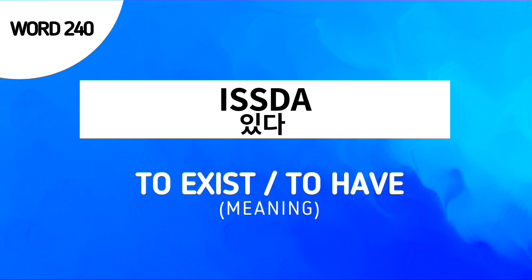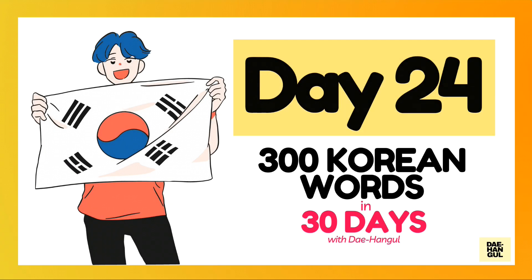Next word is 있다 (Itta), and it means 'to exist' or 'to have.' Again, Itta means to exist or to have something. It can be used for both meanings, making it one word that covers both concepts in Korean.